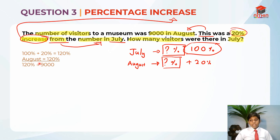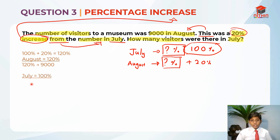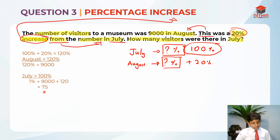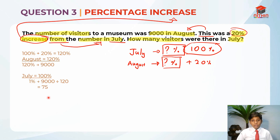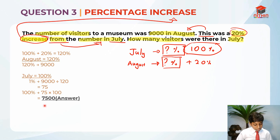Since we know that 120% is 9,000, we can move on to finding July. July is 100%, but in order to find July, we need to find 1% first. So 1% is 9,000 divided by 120, which equals 75. So 1% refers to 9,000 divided by 120 equals 75. Now since we have 1%, we can find 100%. So 100% refers to 75 times 100, which equals 7,500. So this is the answer for question 3.